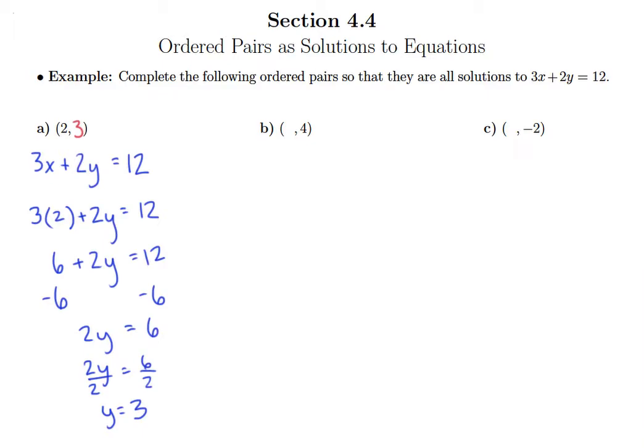All right, so moving on to part B. This time we know the y value. The y value is 4. So we'll say 3x plus 2 times 4 equals 12. And of course, this time solve for x. So 3x plus 8 equals 12.